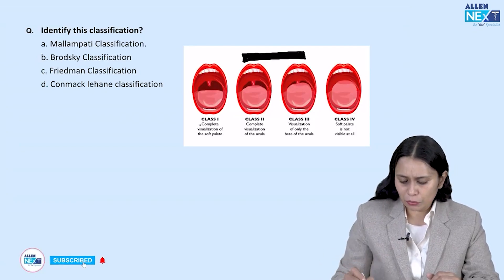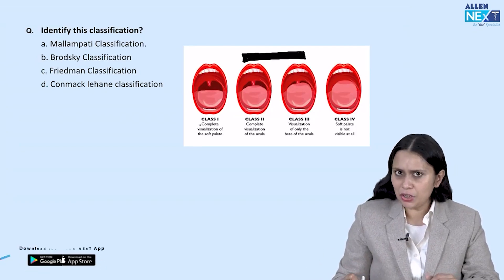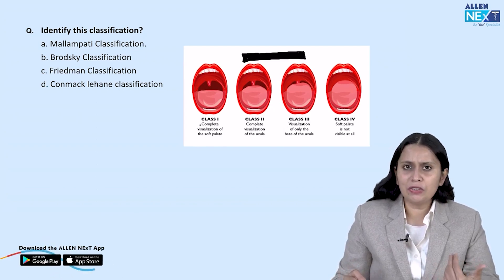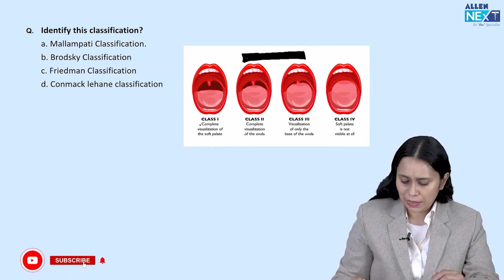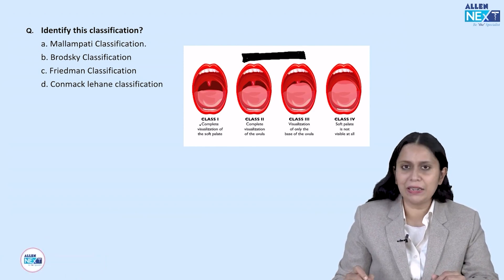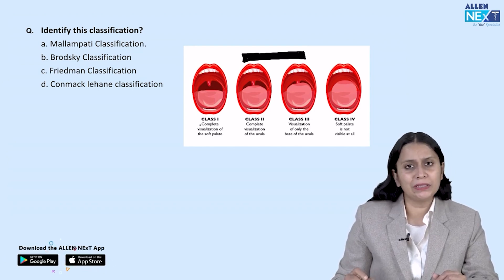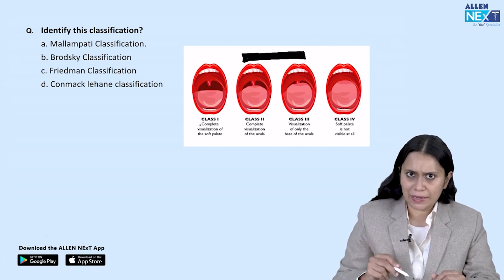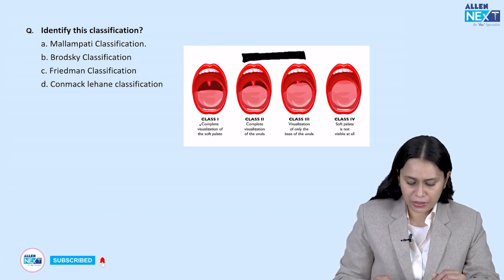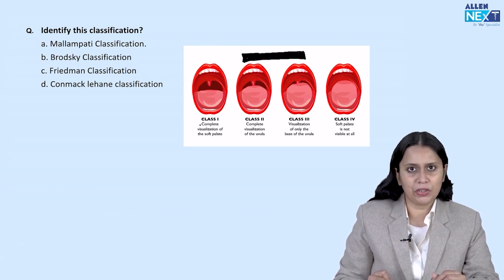Identify this image. A classification was given in which the oral cavity was open and the structures of the oral cavity were visible. It was classified into class 1, class 2, class 3, and class 4. The options given were: Malampati classification, Brodsky classification, Friedman classification, and Cormack-Lehane classification.